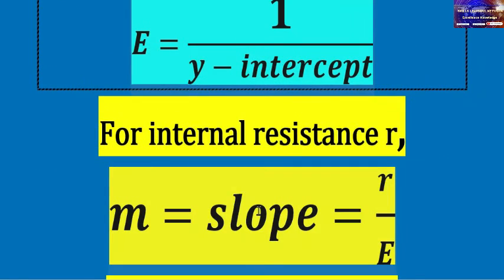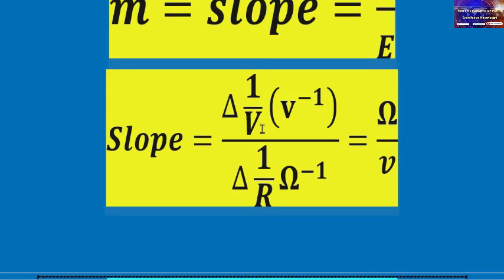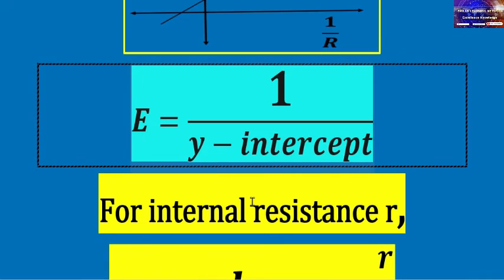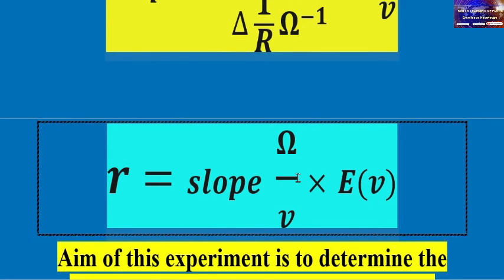For internal resistance, r is obtained from the slope. We have slope equals r over EMF, so after calculating the slope using the formula — change in (1 over V) divided by change in (1 over R) — the internal resistance r equals slope times EMF. The unit of r is ohms.